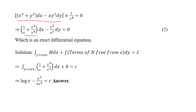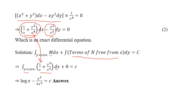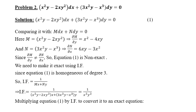Multiplying the equation by 1/x⁴ makes it exact. To find the solution, integrate M (the new M after multiplication) with respect to x keeping y constant, then add terms of N that are free from x. Here the term −y³/x³ is not free from x, so we add 0. Integrating gives log x − y³/(3x³) = C as the required solution.